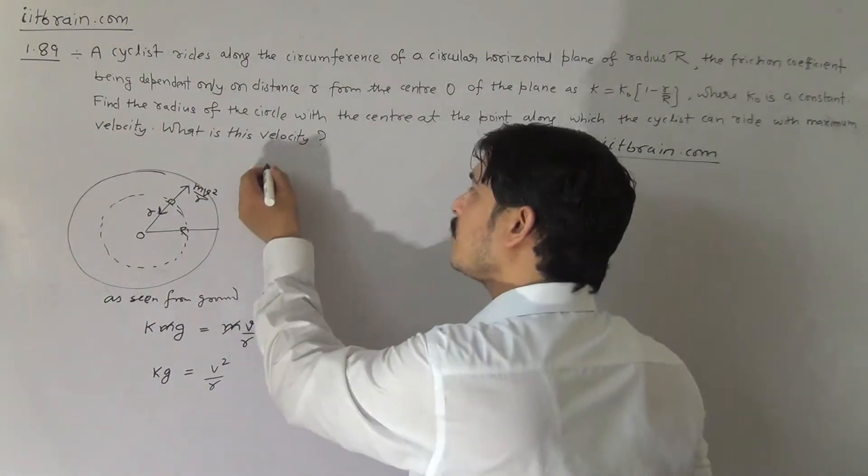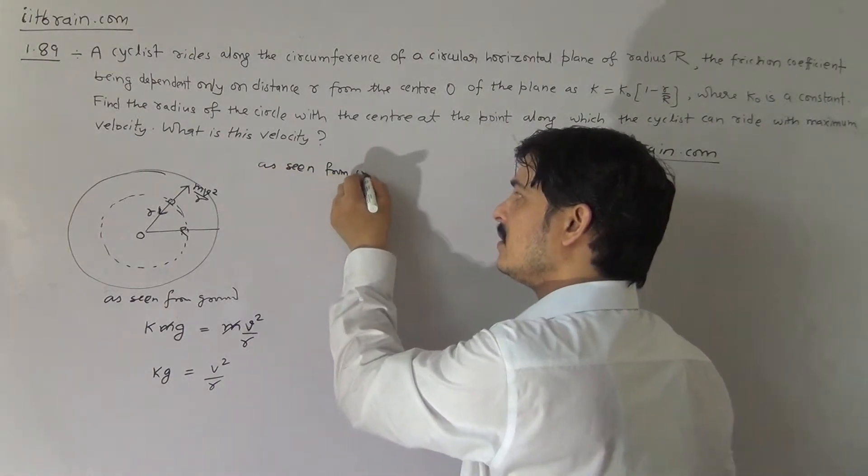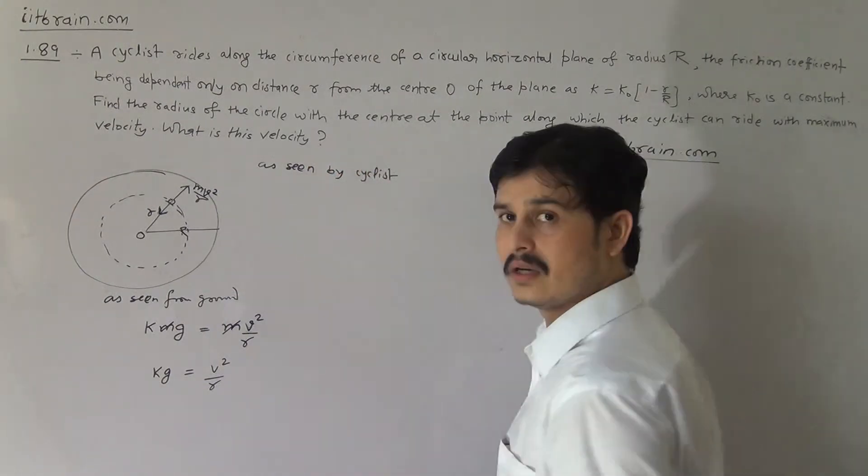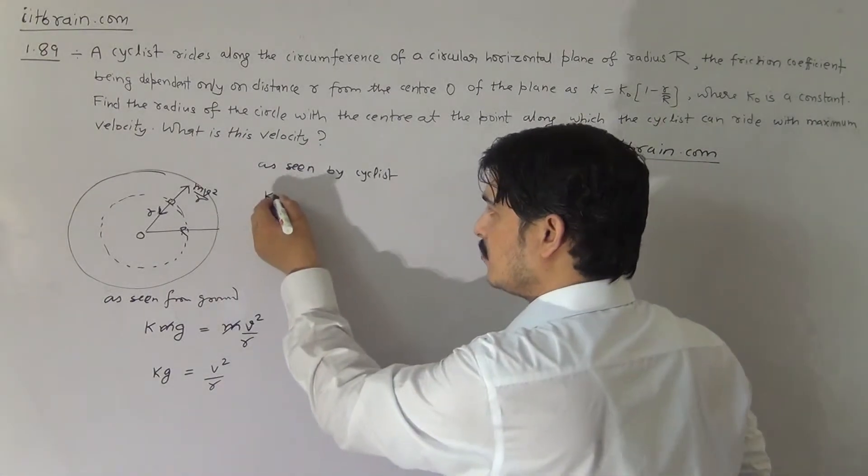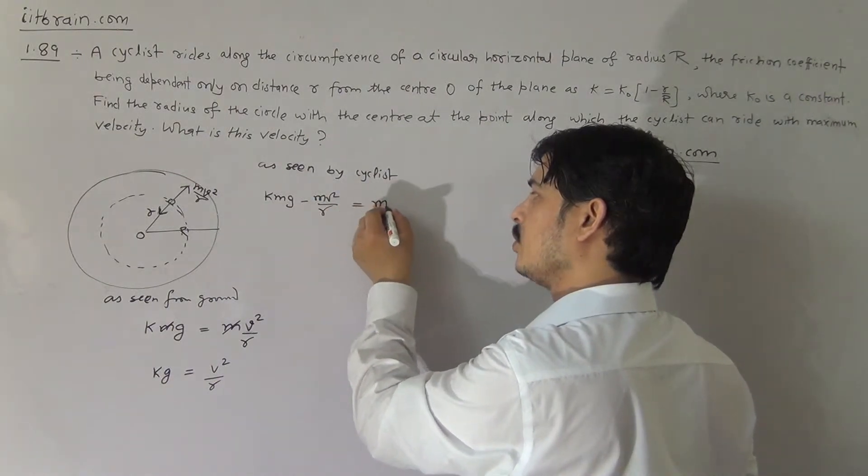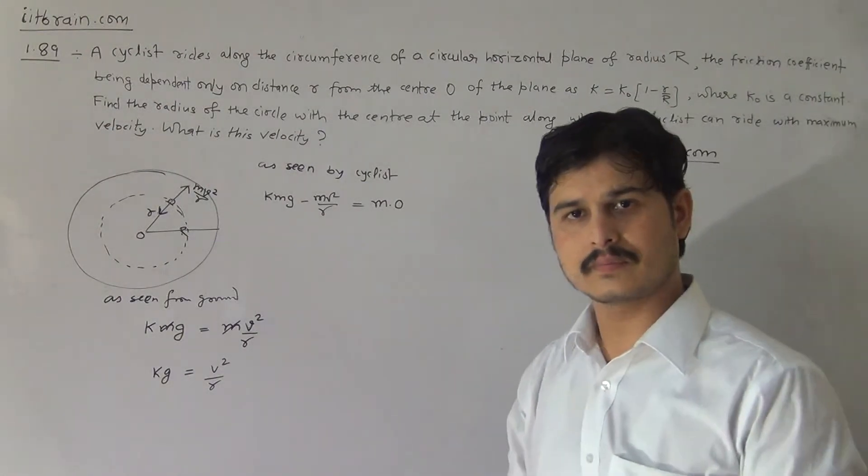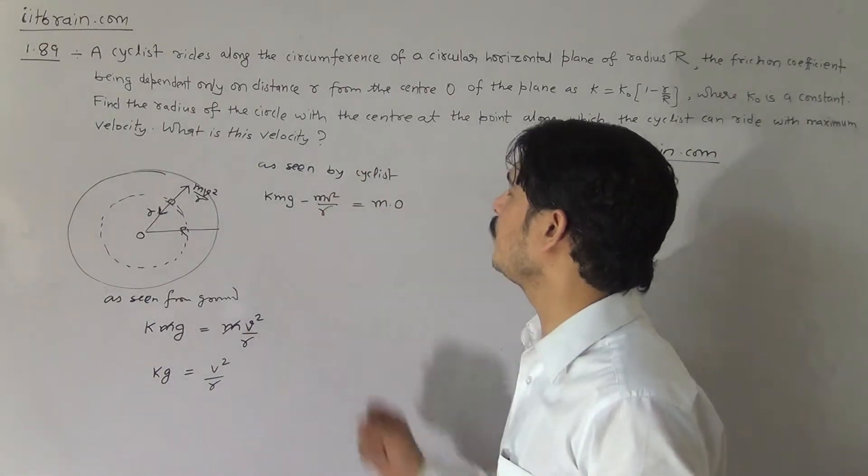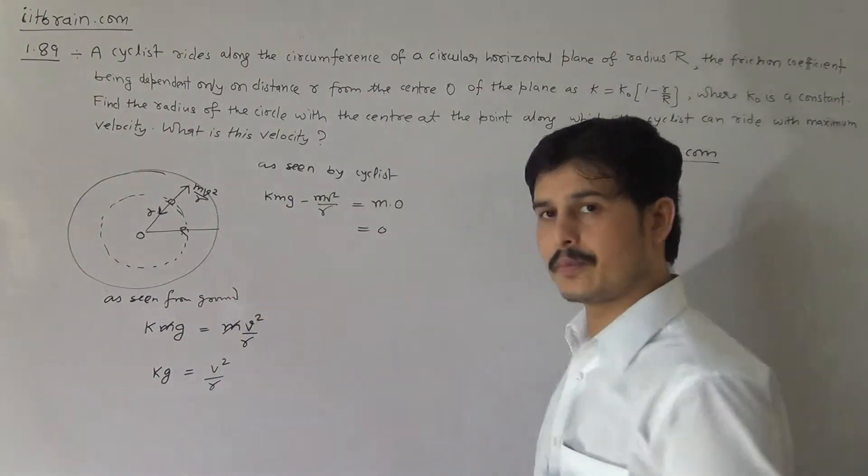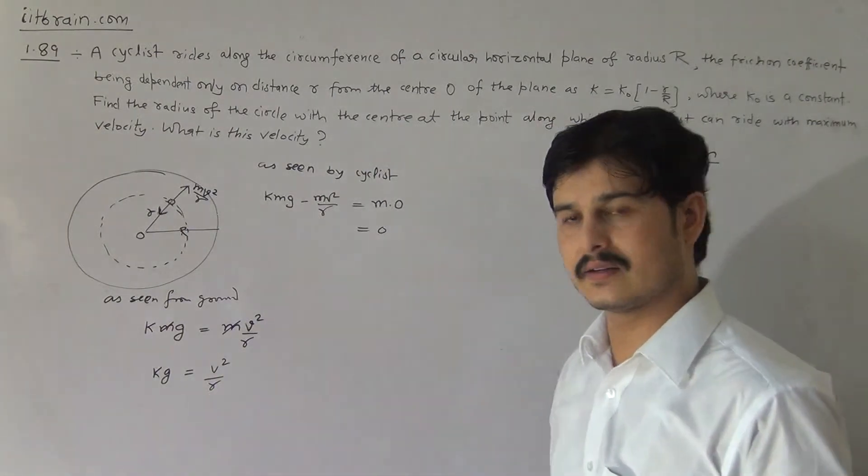As seen by the cyclist, as seen from the cyclist, Newton's equation will be kmg inward and mv square by r outward, and the result of these two is m into a, and acceleration is zero from the cyclist's point of view. Kmg minus mv square by r is mass into zero. From the ground observer's point of view, kmg equal to mv square by r, so kg is v square by r.